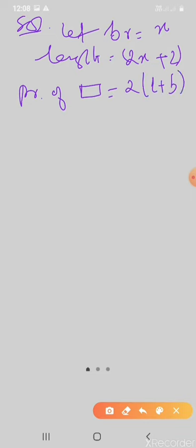The perimeter is 154, so 154 is equal to two into length, which is two x plus two, plus breadth, which is x.